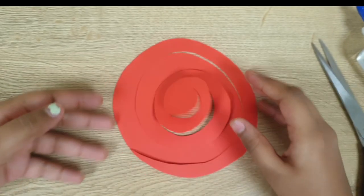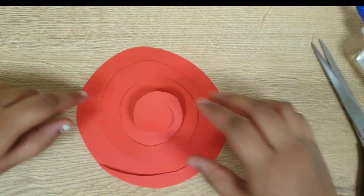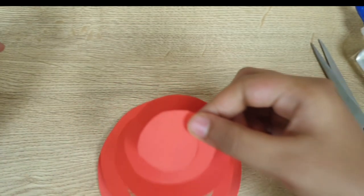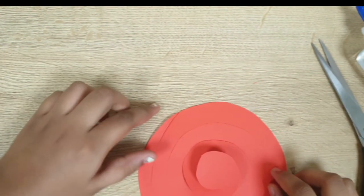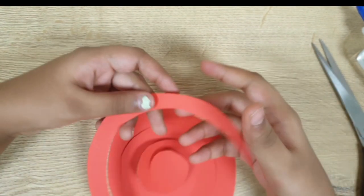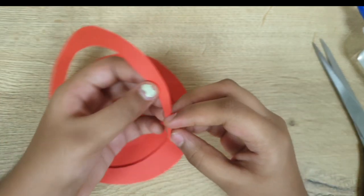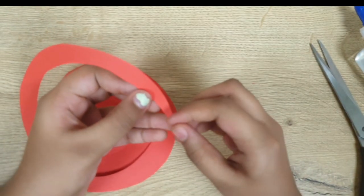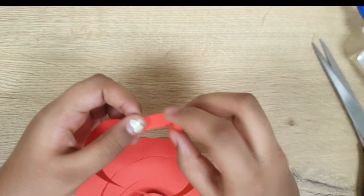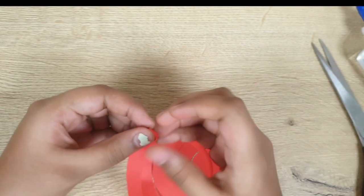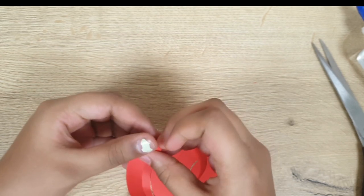Okay, so now the next thing which you have to do is take this pointed part and start rolling it. You have to do it all the way, all the way down the spiral.